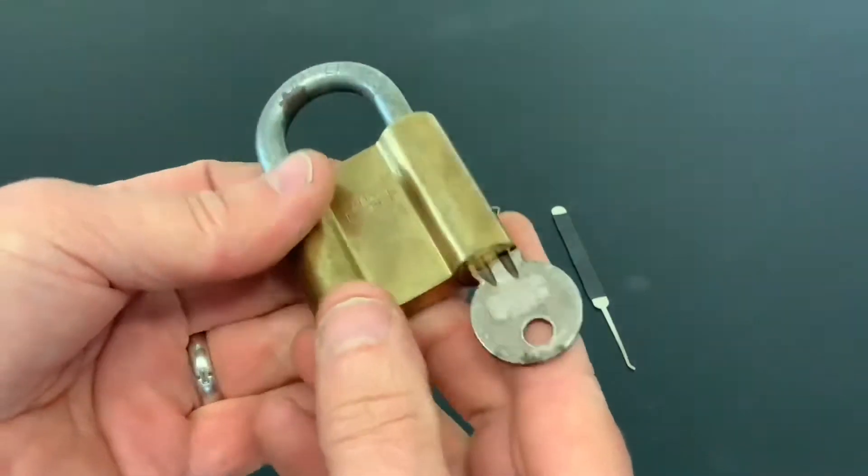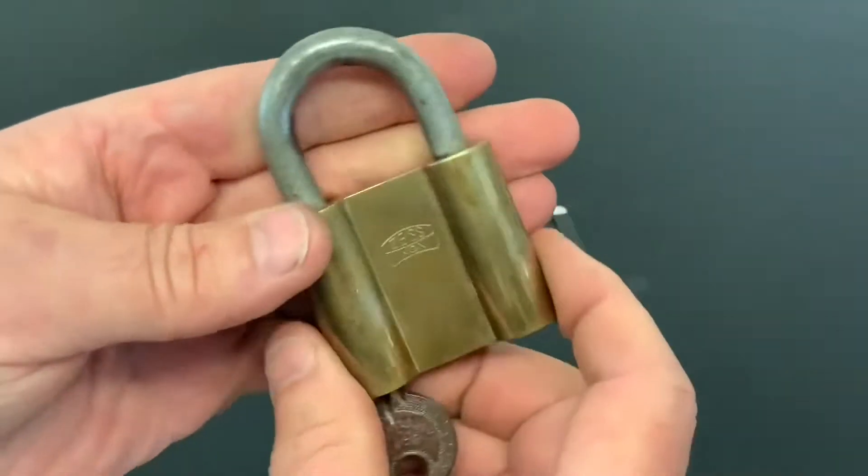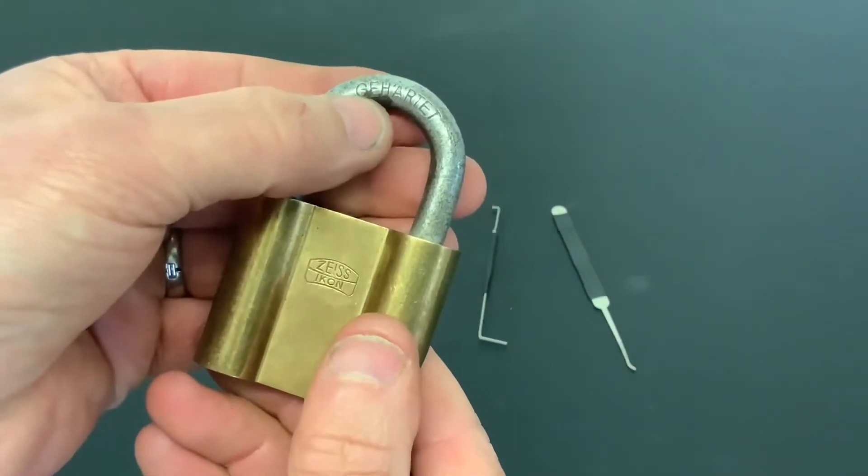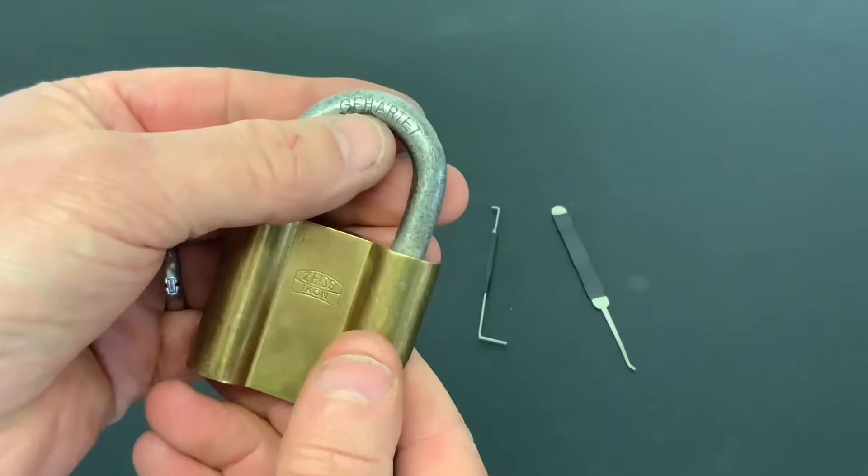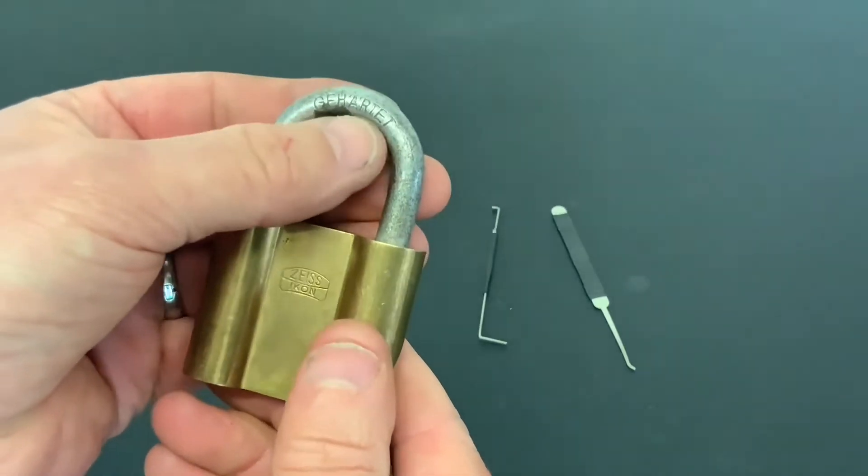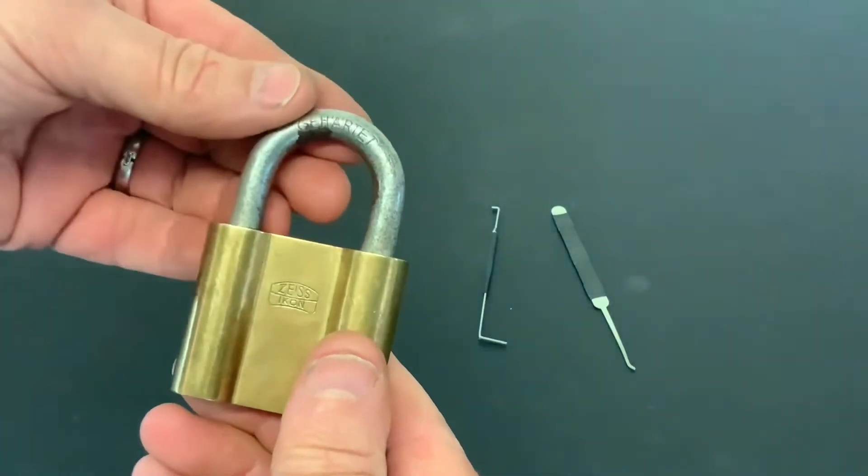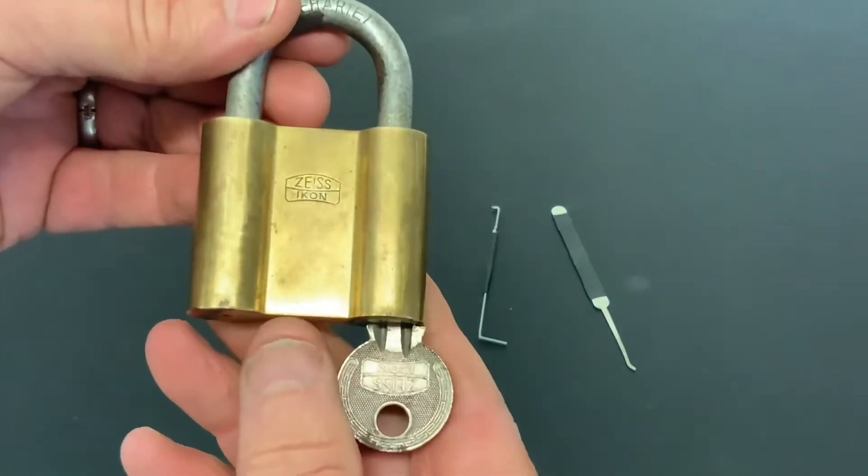I didn't have a clue about this lock. I didn't know where it was made or nothing. So what I did was I actually googled that word and put translate next to it, and it apparently is German and that means hardened, which to be honest I thought it would be hardened being on top of the shackle. So yeah, this must be a German lock.